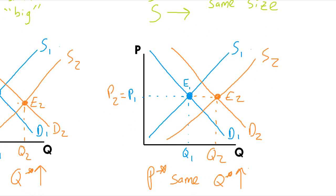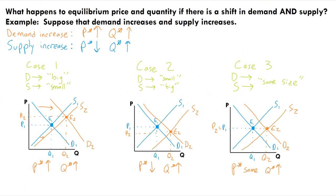So the end result is that with an increase in demand and an increase in supply, Q star increased but the price effect is ambiguous. P star could go up, down, or stay the same.